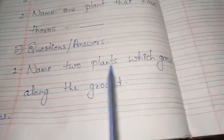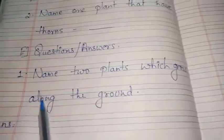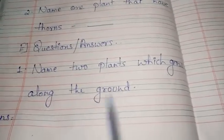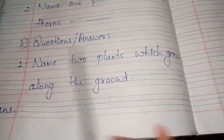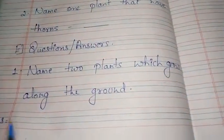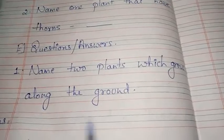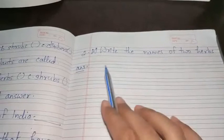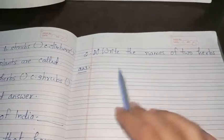Question and answer — name two plants which grow along the ground. They have to write them, picking two different plants. Write the names of two herbs. Okay.